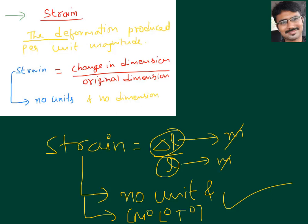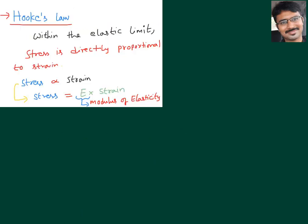So what is strain? The deformation produced per unit magnitude. In formula: change in dimension to original dimension. There are different types of strains, which we will discuss later. Now let us see one important topic — Hooke's law.